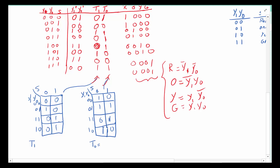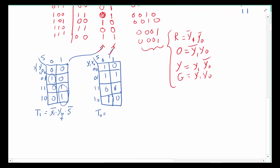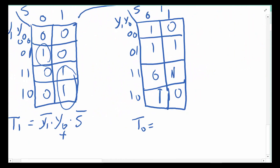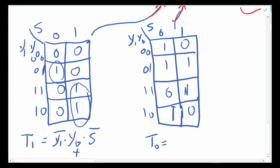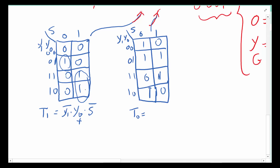T0 is a little trickier with lots of terms. Looking at T1, it's a little simpler. We've got this group by itself, so T1 can be simply written as Y1-not · Y0 · S-not, or the second term, which covers these two together: Y1 · S.